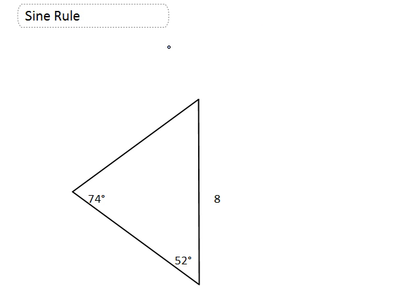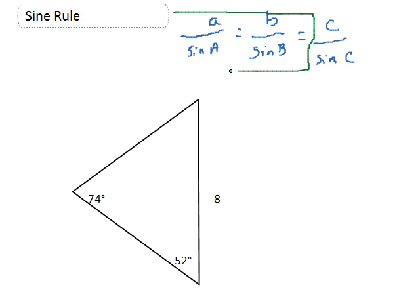Now the sine rule is A divided by sine of capital A, because we're going to call the sides little letters and the angles big letters, divided by B sine B equals C sine C. Now that's all well and good, but actually you're never going to use all of that. The only bit we're ever going to use is this first bit. So don't worry about that third bit.